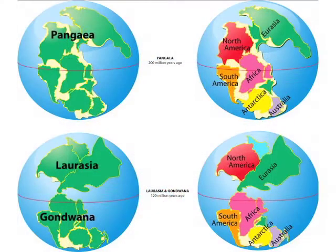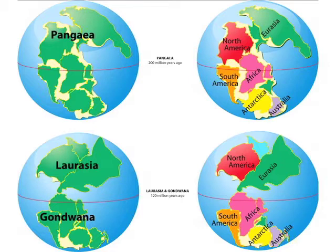Beginning several hundred million years ago, a series of collisions between smaller landmasses began to form a supercontinent called Pangaea. Pangaea contained nearly all of Earth's land in a single continuous body. It was made up of two larger connected landmasses: a southern region called Gondwana or Gondwana land, and a northern region called Laurasia.